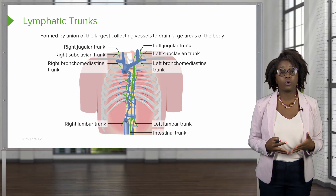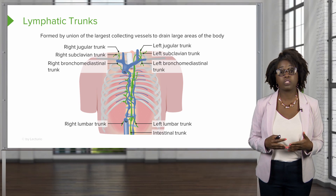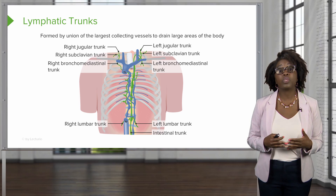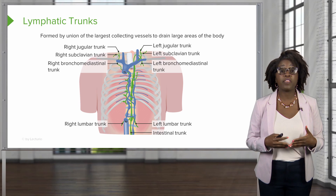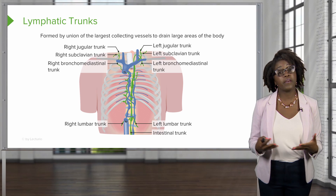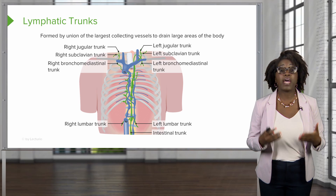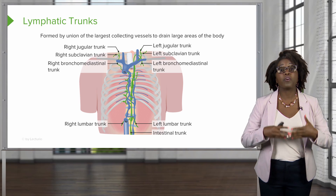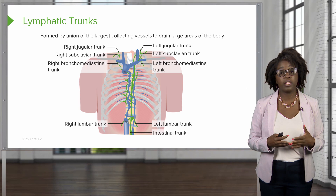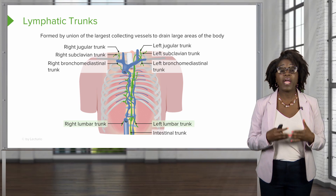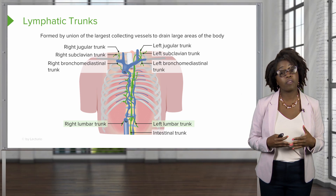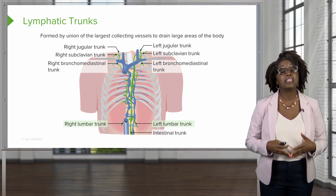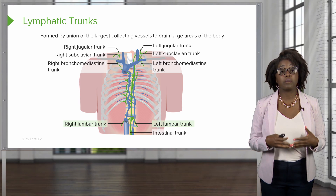These larger vessels, also known as lymphatic trunks, are formed by the union of the largest collecting vessels and they are going to drain large areas of the body. The lymphatic trunks are named for the part of the body that they drain. They include the paired lumbar trunks, which are going to drain the lymph from our lower limbs, walls of the viscera of the pelvis, the kidneys, the adrenal gland, and the abdominal wall.